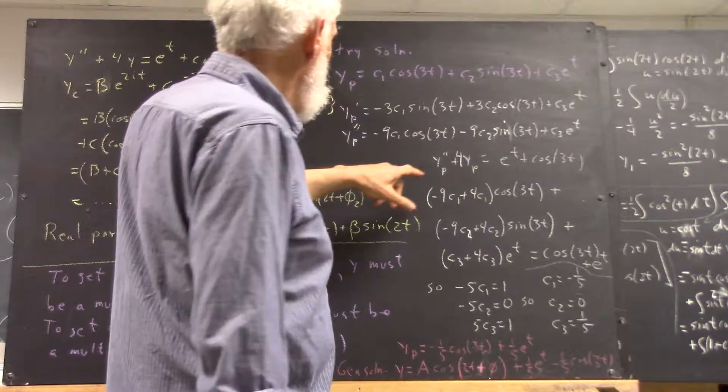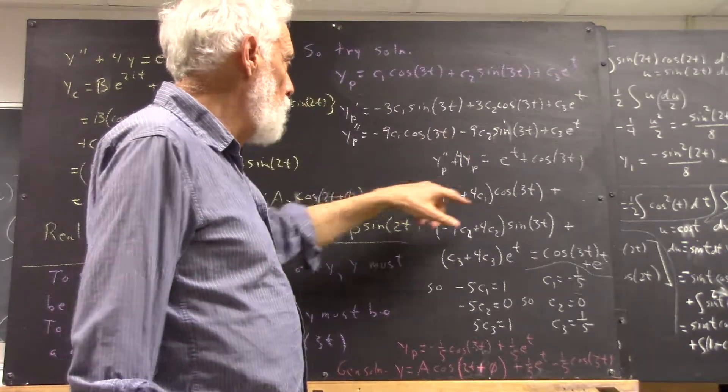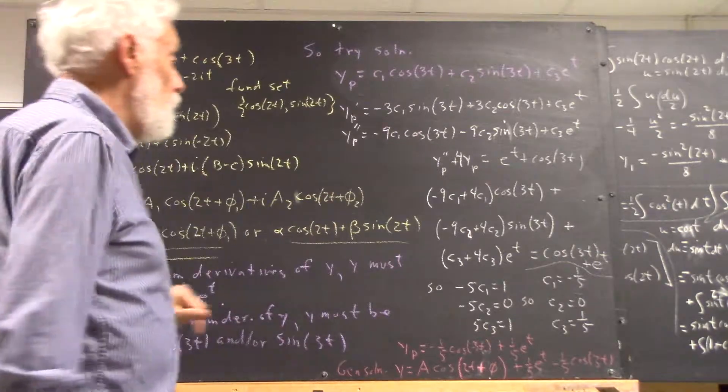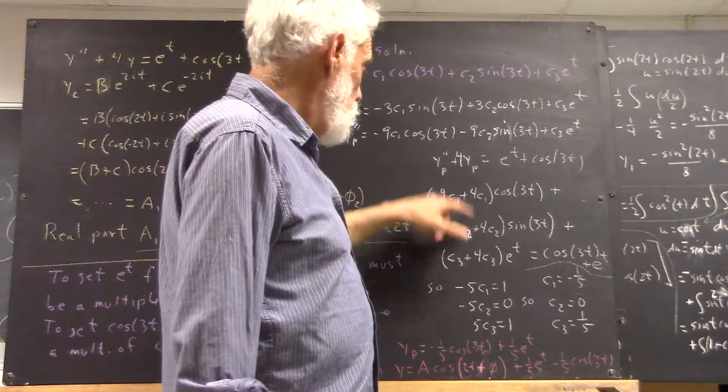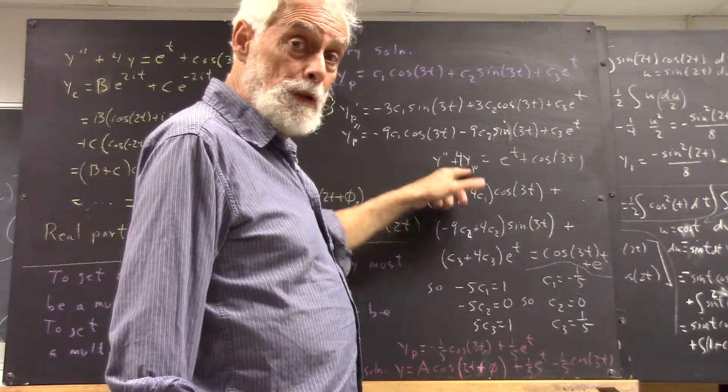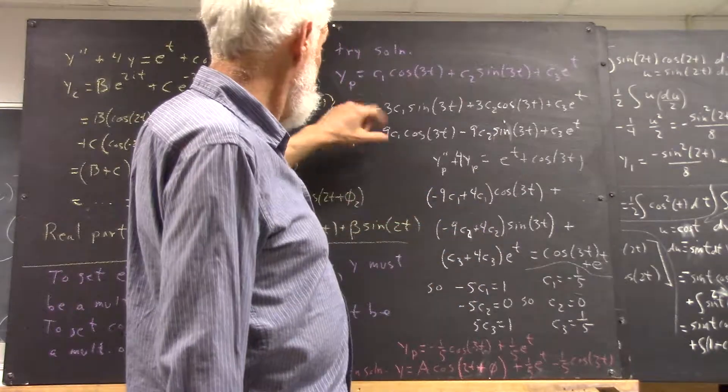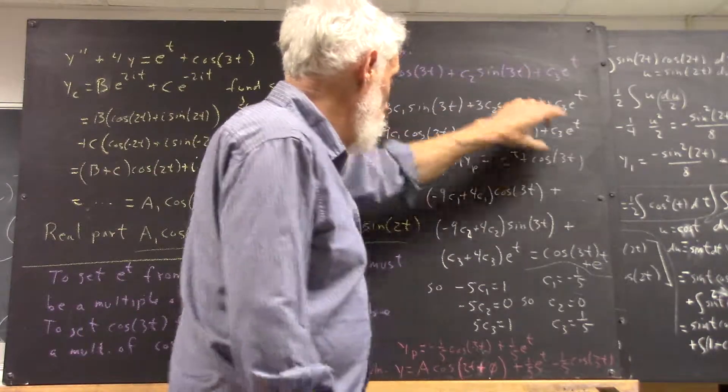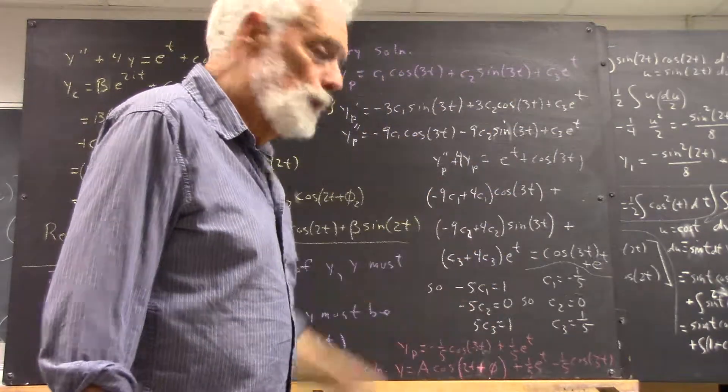When we do yp double prime plus 4yp, which is what we have to do if we plug this into this equation, this is what we get. I'm not going to point to every step of this. We add this to this, well, four times this to this, and here's what we get.